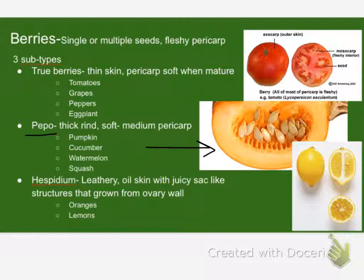Grapes are a true berry, just like a tomato — and eggplant and a pepper. Eggplant and peppers are berries, which just weirds everybody out. Strawberries: not a berry. Tomatoes: totally a berry.